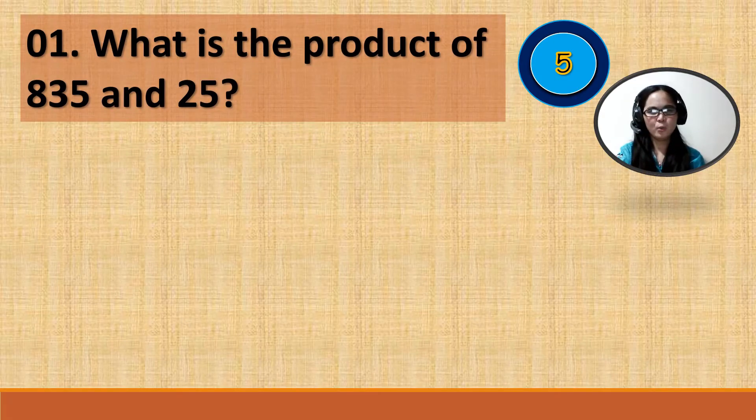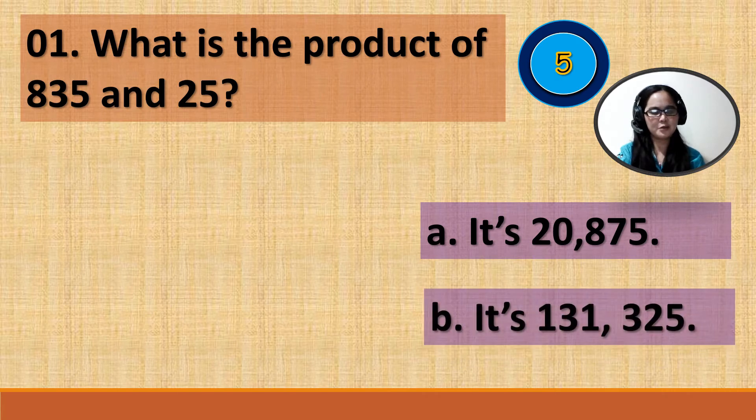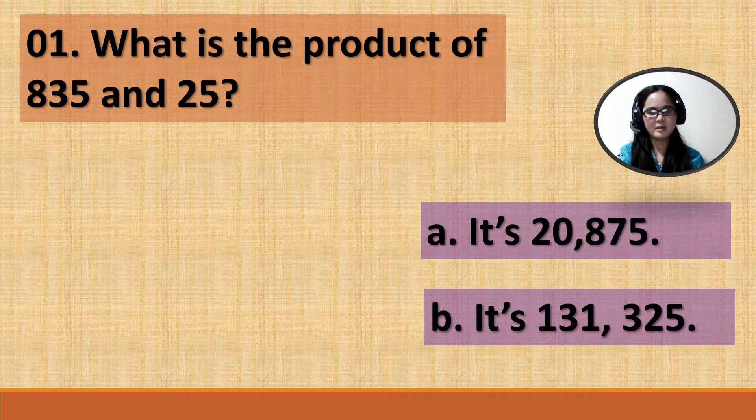Number 1: What is the product of 835 and 25? A. It's 20,875. B. It's 131,325. Your time starts now. Times up. The correct answer is letter A. It's 20,875. So, 835 times 25 equals 20,875.